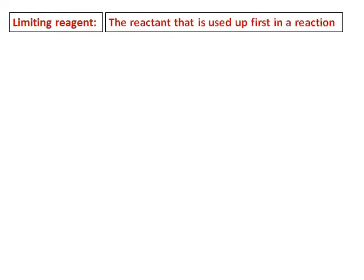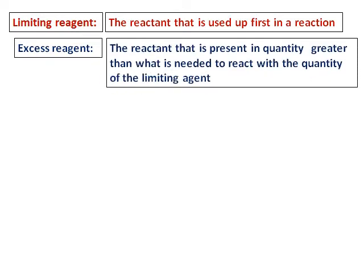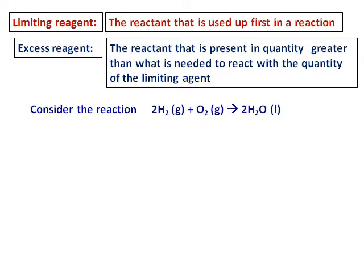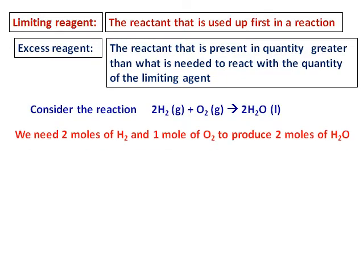Before we start doing the actual questions, let's understand what a limiting reagent is. It is the reactant that gets used up first in a reaction. The excess reagent is the one present in a quantity greater than what is needed to react with the limiting agent. For example, consider the reaction hydrogen plus oxygen giving water. Once you balance the reaction, you need 2 moles of hydrogen to react with 1 mole of oxygen to give 2 moles of water — a ratio of hydrogen to oxygen of 2:1.